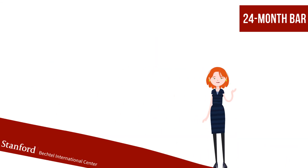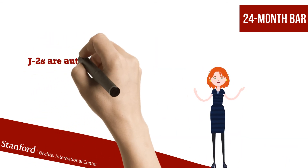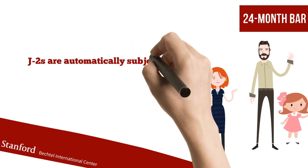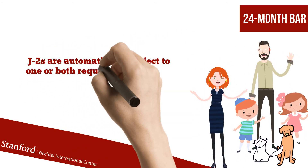If the J-1 is subject to one or both requirements, the J-2 dependents are automatically subject as well.